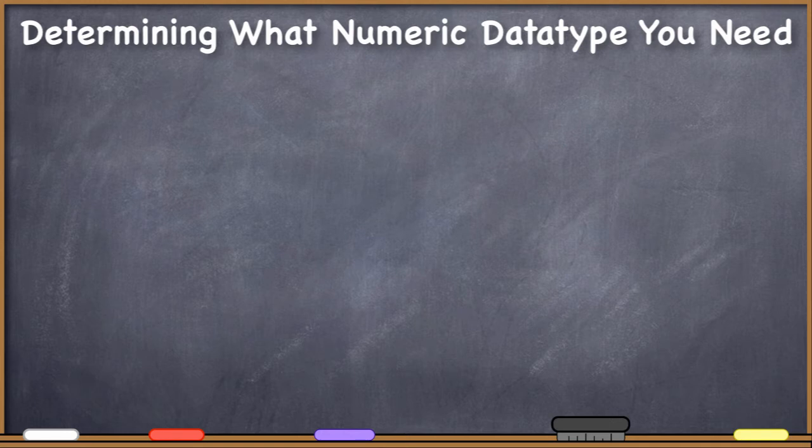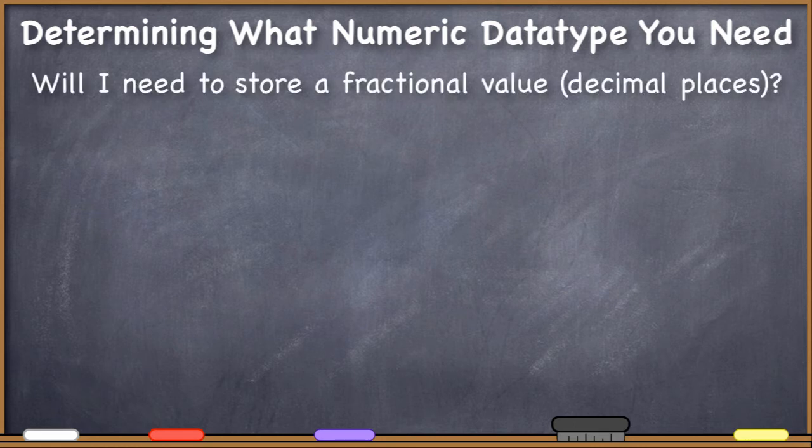So when you need to store a number, there are two major questions that you need to ask yourself about the number that you need to store in order to decide what data type you're going to need to declare for the field. First, ask yourself if the number that you need to store will need to include decimal places, fractional values, yes or no. Depending on your answer, you'll need to make some choices about what field type to declare rather than others.